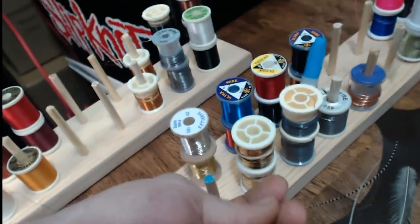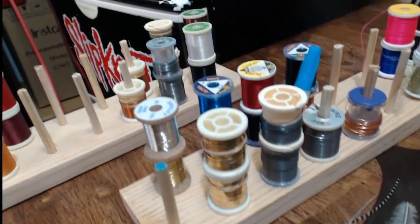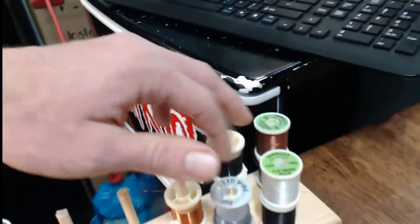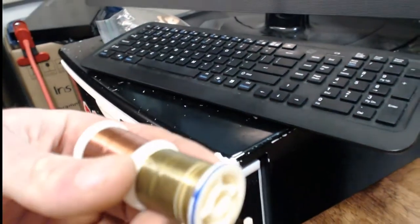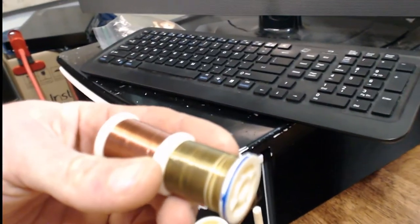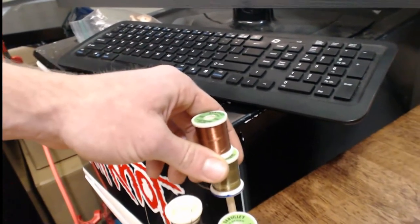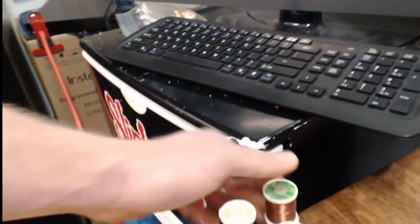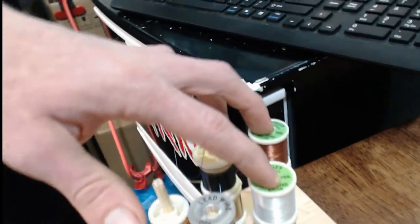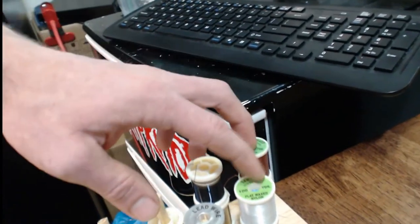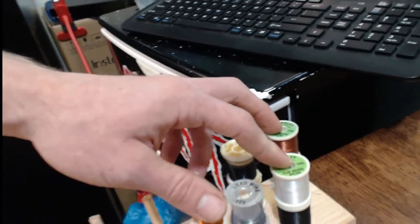I have some tinsel back over here. I have my first bobbin of thread I ever bought when I was 12 years old. It is a really heavy 210 denier and I've gotten four bobbins. I don't use it that often, you use it on bigger flies.